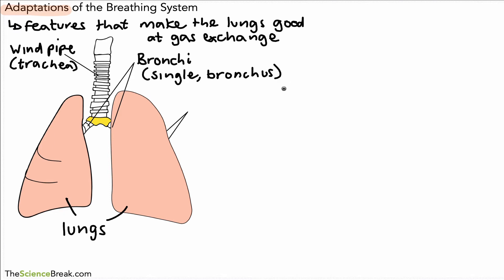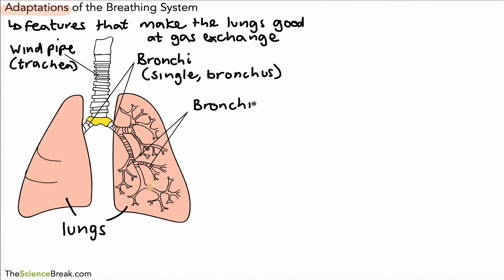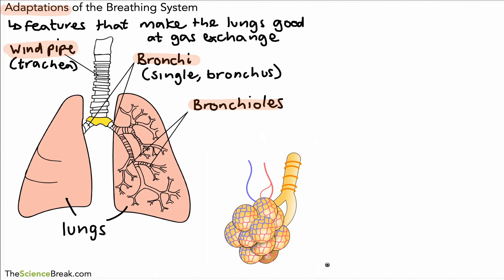Now for the other labels we have to actually slice the lungs in half. So let's get rid of that top layer and look at the details inside. What we have are some smaller tubes called the bronchioles — these are smaller tubes that carry air in. At the end of all those bronchioles is a structure called an alveolus, and this is where the gas exchange actually happens.